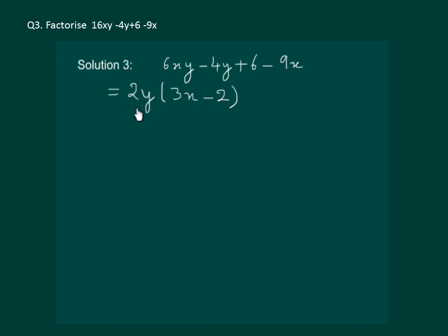By taking out 2y common we get 3x minus 2 in the bracket. Here we observe that the x term is positive. But if we take out 3 common from the last two terms then we will have the x term negative. So let us do one thing. Let us take out minus 3 common instead of plus 3. This will give us 2 minus 2 plus 3x.